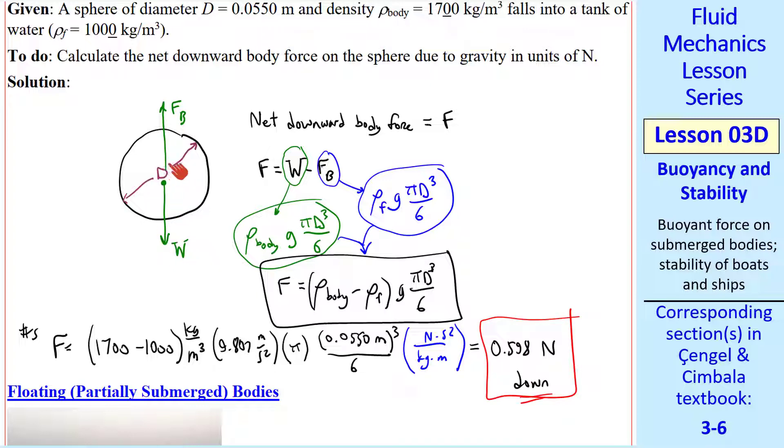Since there's a net downward force, this body will sink. If this were negative, the body would rise. For example, a plastic sphere that is lighter than water. Since we're talking about statics, you would have to have some kind of string attached to this sphere, holding it in the water, or perhaps a scale weighing this sphere. And you would find that the net force is 0.598 newtons downward.